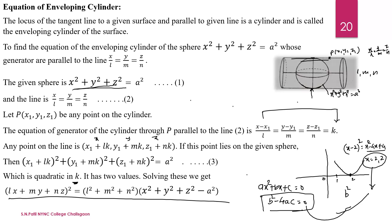Similarly, we substitute this point into the equation of the sphere. After solving, we get a quadratic equation. Since the sphere is tangent to the generator, we write the equation in quadratic form ak² + bk + c = 0 and apply the condition b² − 4ac = 0. Solving this gives the required equation of the Enveloping Cylinder. This is the working rule to find the equation of the Enveloping Cylinder.